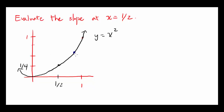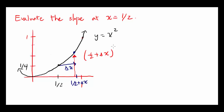Let's say this second point has an x coordinate of 1 half plus delta x — we have moved delta x, or change in x, from 1 half. The y coordinate of this point we can find by plugging 1 half plus delta x into y equals x squared. And 1 half plus delta x squared equals 1 fourth plus delta x plus delta x squared.